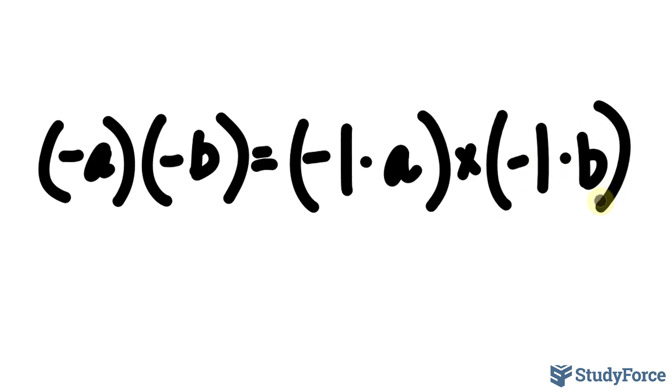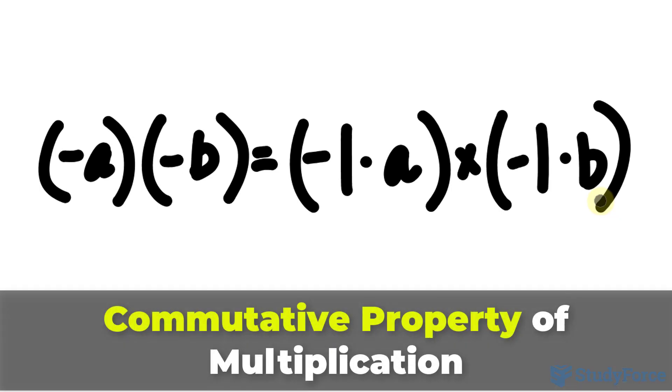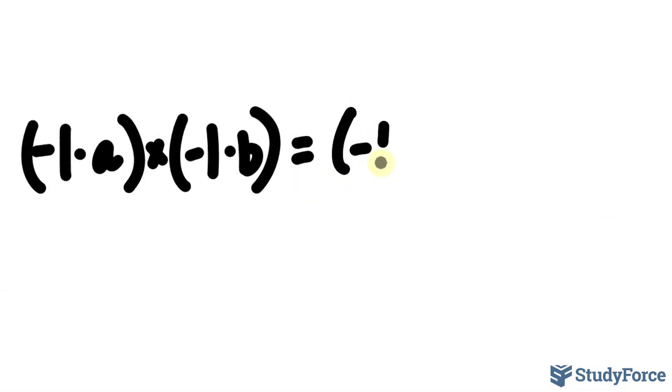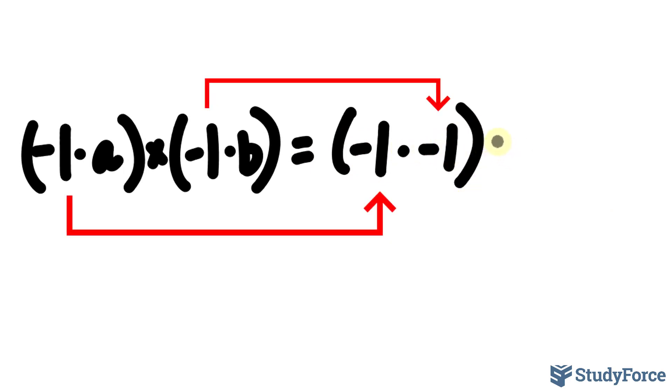Notice that both a and b are positive. Now according to the commutative property of multiplication, we can rearrange the factors. Notice that the expression on the left can be written as negative one times negative one multiplied by a times b.